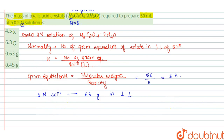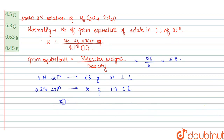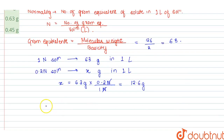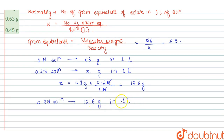Now we have to prepare a 0.2 normal solution, so a 0.2 normal solution must have x grams in one liter. By cross multiplication, x is equal to 63 grams multiplied by 0.2 normal upon 1 normal. The normals cancel and x equals 12.6 grams. So to prepare a 0.2 normal solution, we must add 12.6 grams of oxalic acid crystals in one liter.